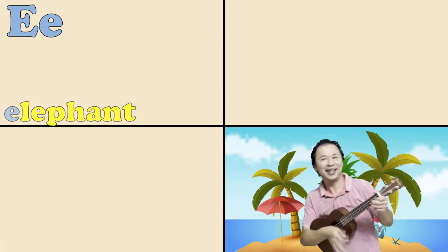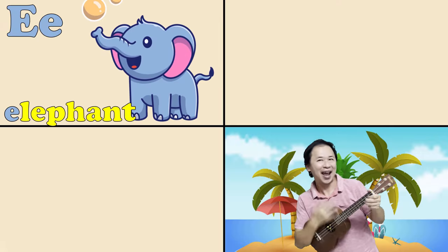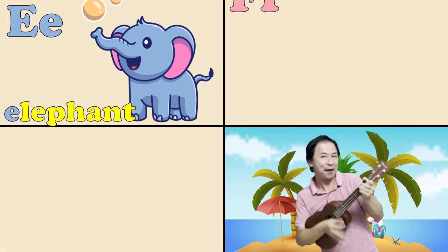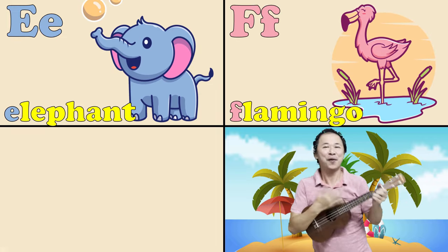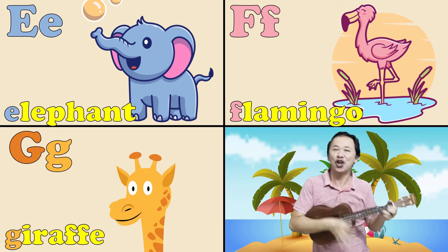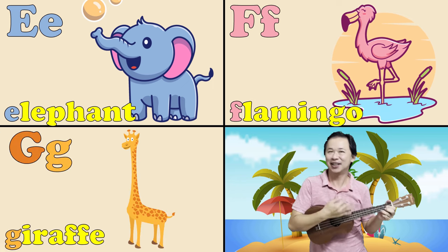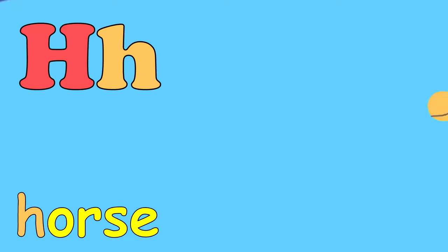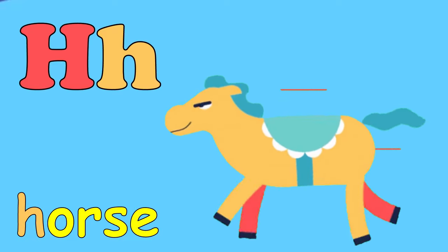E is for elephant, eh. F is for flamingo, ffff. G is for giraffe, j. H is for horse, h.